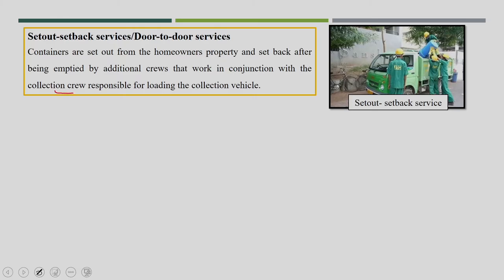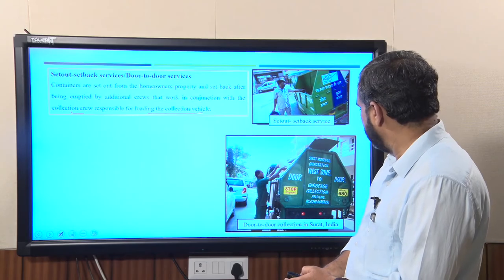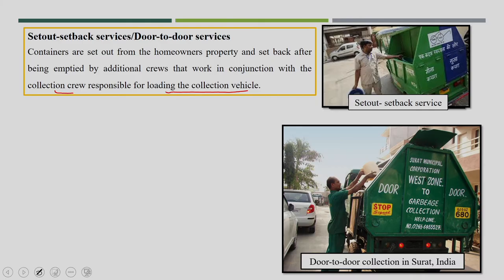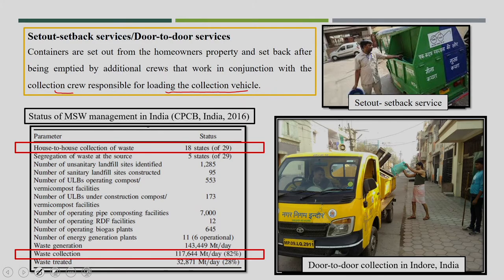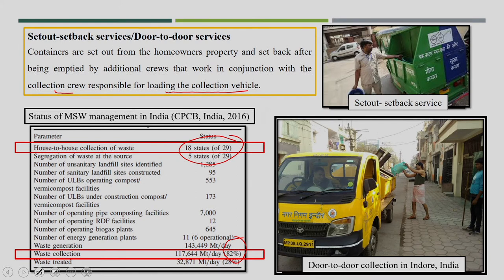In the set-out set-back service, the collection crew is responsible for loading or unloading of the collection vehicle; the house owner is not responsible. Under Swachh Bharat Mission, most cities have started house-to-house collection. By 2016, 18 out of 29 states had house-to-house collection systems, and waste collection reached 82%, compared to only 40–50% earlier with curb services. If every state implements house-to-house collection, it is possible to achieve more than 95% waste collection.